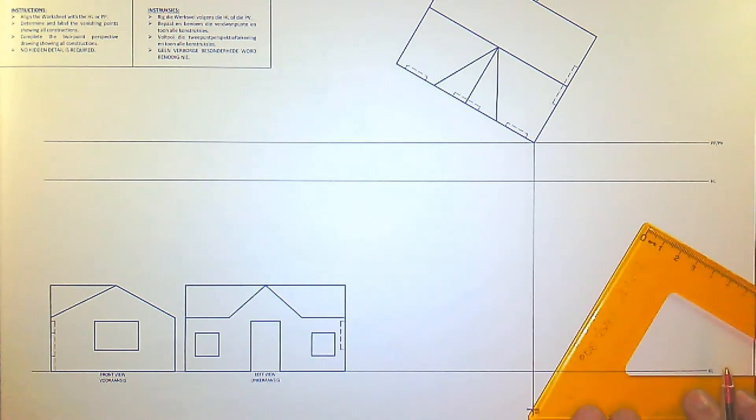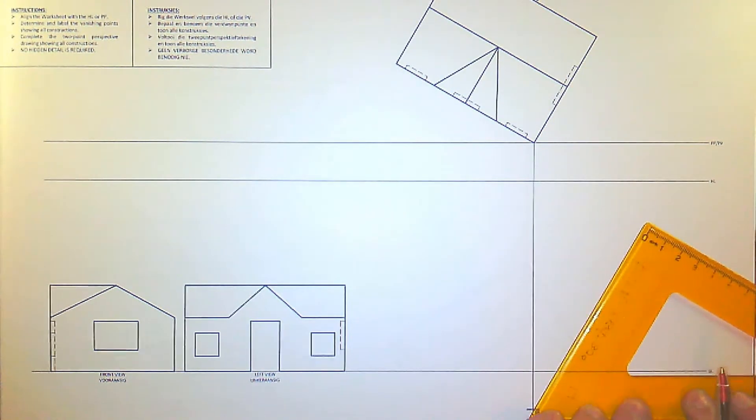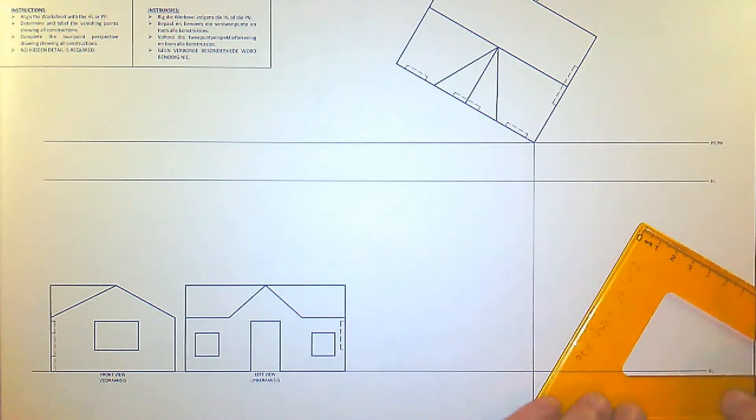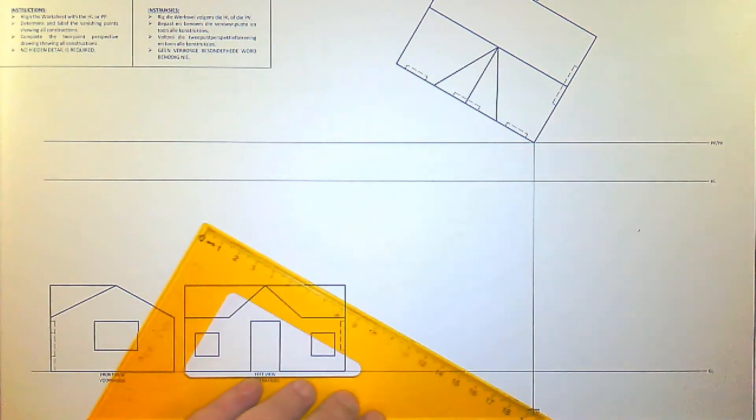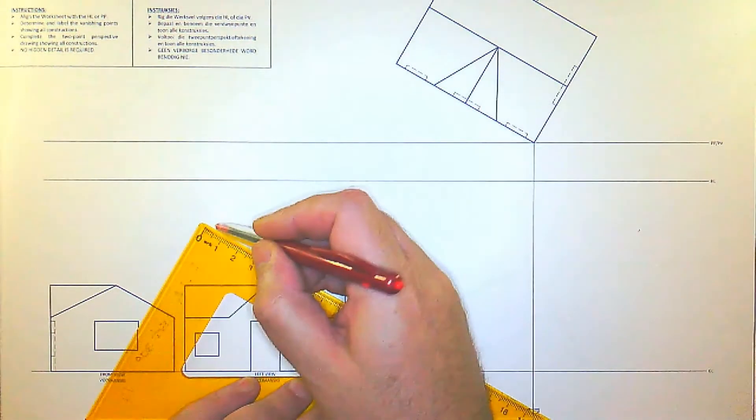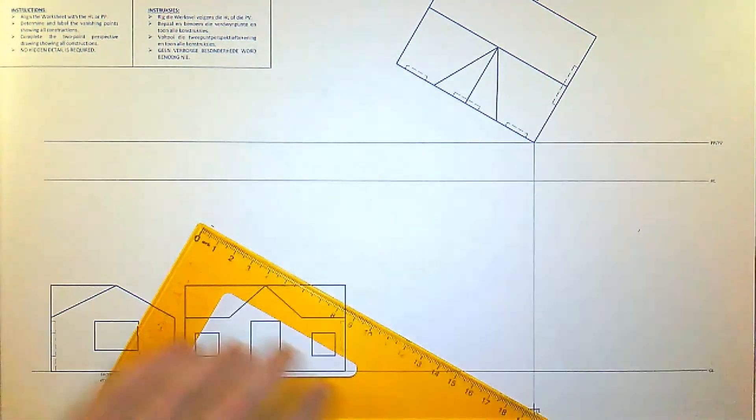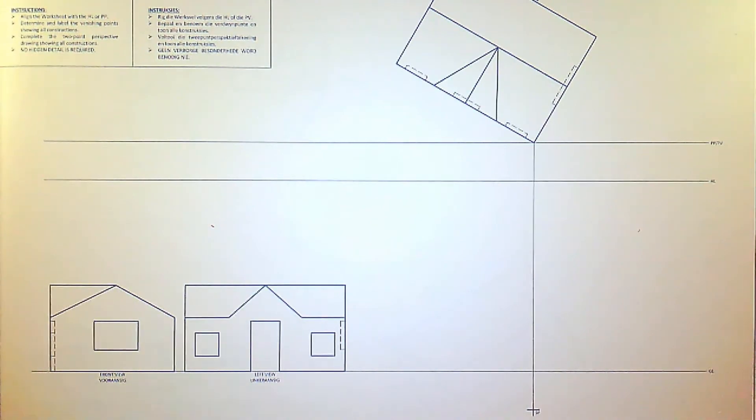So you move your set square to the stationary point and then you draw the line. Now if it doesn't reach, just make a little marker. The same for the other side, make a little marker there.